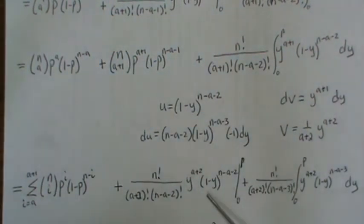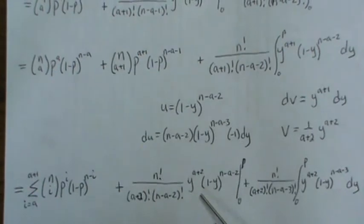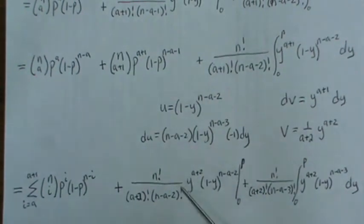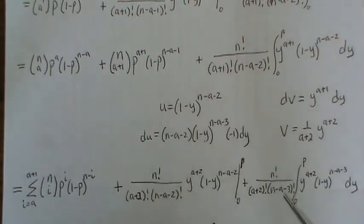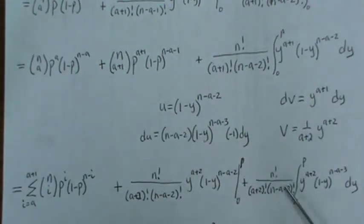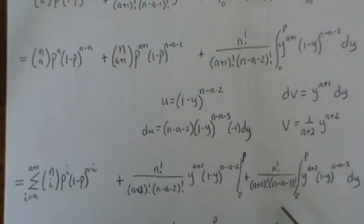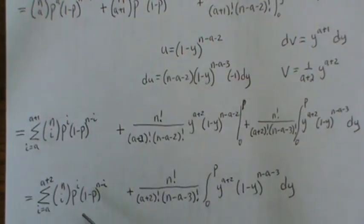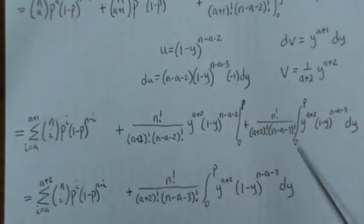Then this is the UV component evaluated from zero to P. The zero makes this go away. Notice that this right here is N choose A plus two, so that can be rewritten as the combinatorics. Over here, there's usually a minus, but that minus canceled and made a plus. So when we plug in P, that adds one more term to the expression. We come down, and that goes into here: we're going from A to A plus two, so there are three terms, and then this is the integral remaining.